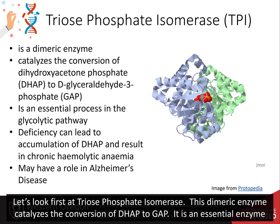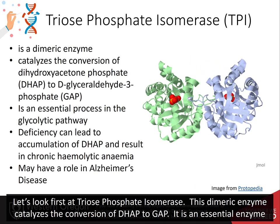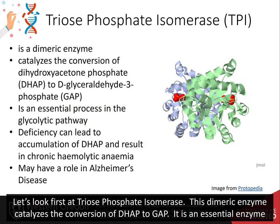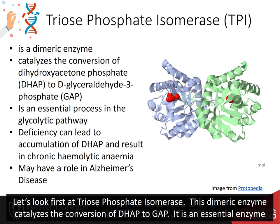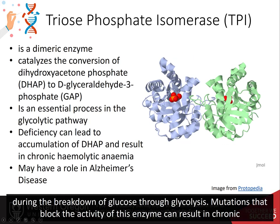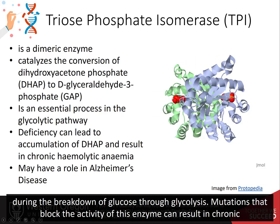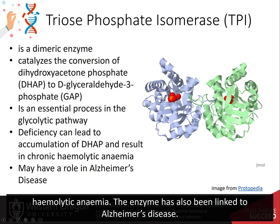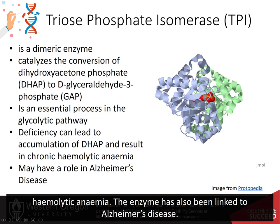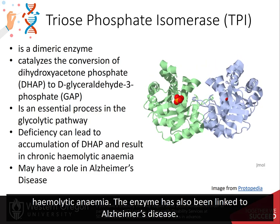Let's look first at triose phosphate isomerase. This dimeric enzyme catalyzes the conversion of DHAP to GAP. It is an essential enzyme during the breakdown of glucose through glycolysis. Deficiency can result in chronic hemolytic anemia, and the enzyme has also been linked to Alzheimer's disease.